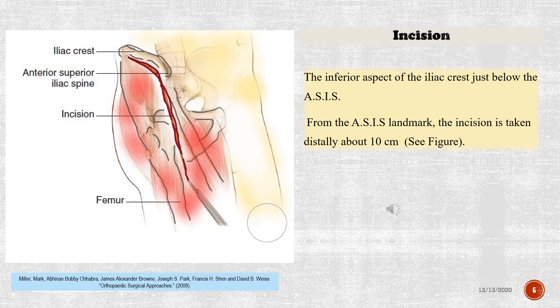Incision: the inferior aspect of the iliac crest, just below the ASIS. From the ASIS landmark, the incision is taken distally about 10 cm.